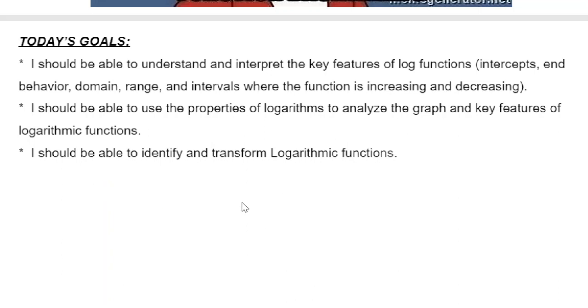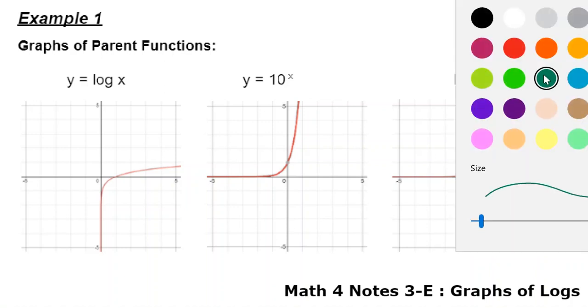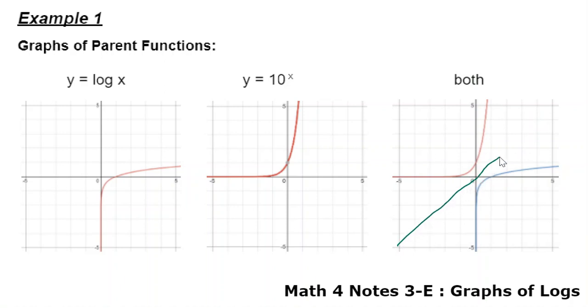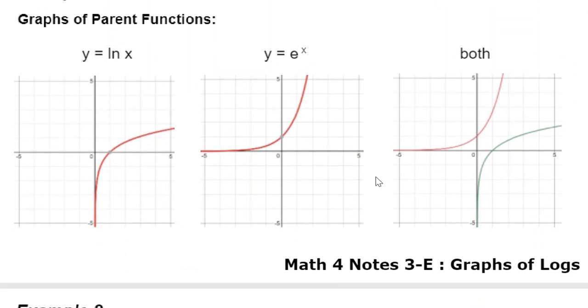You know, we've done transformations with other parent functions. Now we get to play with logs. First of all, I wanted to show you this. This is log base 10 of x, and this is y equals 10 to the x. When you put both of them on the same graph, I want you to notice something that happens here. There is a line that passes right down the middle there. This is a reflection. This is not the first time you've seen something like this happen. When I go down to the natural log and e to the x, I notice the exact same thing happening again.